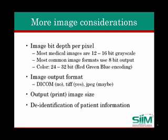For color images, there are typically 24 bits per pixel, with each of the primary color weights represented by 8 bits when producing a specific color per pixel.